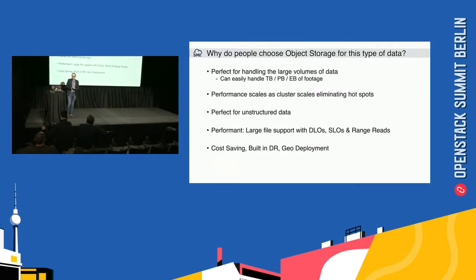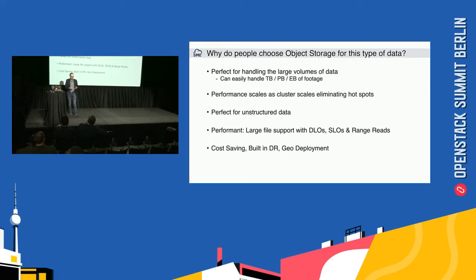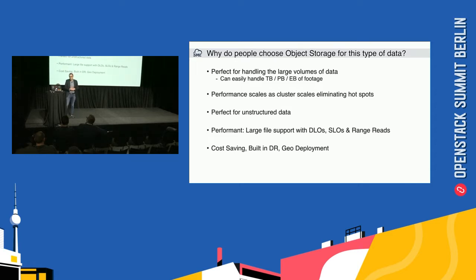Why do they pick object storage? Object storage is perfect for handling very large volumes of data — terabytes, petabytes, exabytes — and it can scale pretty much endlessly and eliminate hot spots you might see on typical file storage. It's also perfect for unstructured data, and there's a lot of that in the media space. It's very performant, and a lot of platforms provide tools like DLOs, multi-part uploads, and range reads for moving large amounts of data between storage platforms. There are also other benefits like cost savings and built-in DR and geo deployment.